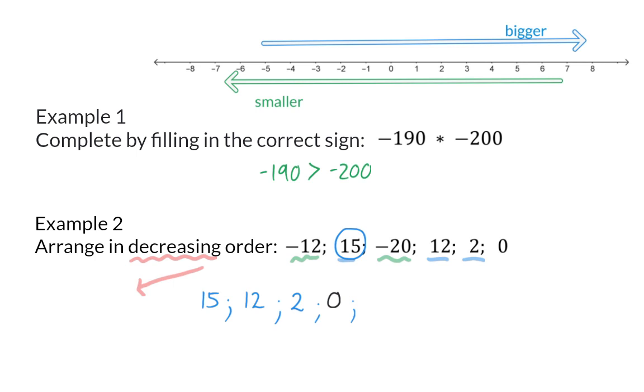Here we start off with the least negative value, which in essence has the smallest number if we ignore the sign, and that is minus 12. And then finally, we have our minus 20, which is the biggest negative value, but the smallest value in our set.